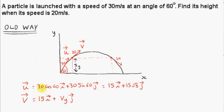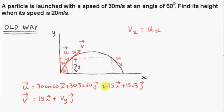The x or i component of velocity never changes because there are no forces acting in the horizontal direction. As soon as the particle is launched, the only force acting on it is gravity, which is vertically down. Gravity has no horizontal component, so it cannot change the horizontal component of the particle's velocity. The horizontal component is constant; vx is equal to ux, and ux is 15 — that never changes.